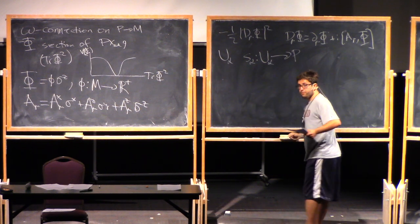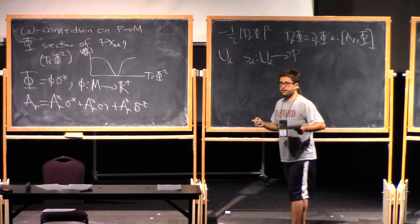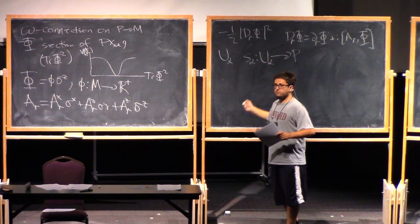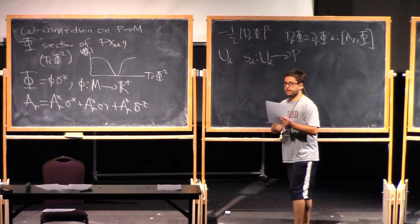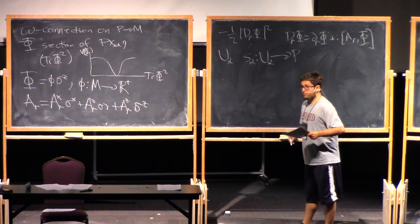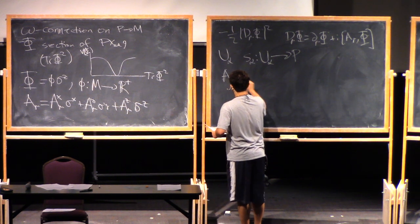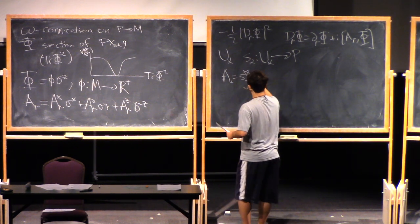The principal bundle. And then I pulled back my connection omega using these S alphas. So that gives me a bunch of local one forms, which I can also call the connection. So A equals S alpha A alpha is S star omega.